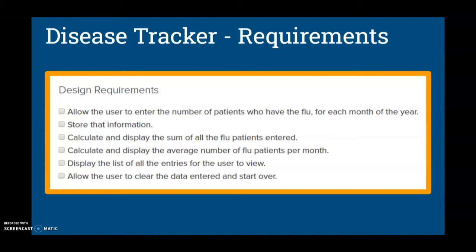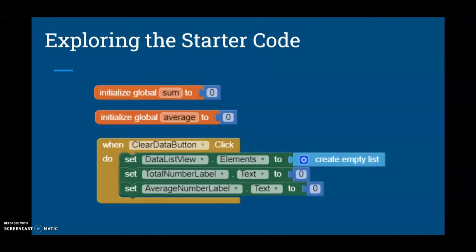We're going to look at what the starter code looks like. We don't have much to start with — basically two variables, sum and average, both initialized to zero. We'll need to manipulate those variables to keep track of our total sum and average. We also have a clear data button, a data list view, a total number label, and an average number label.